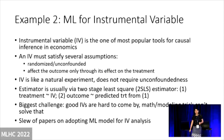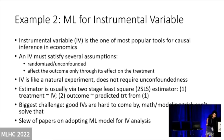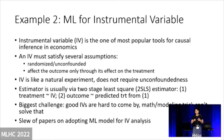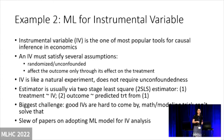The second example is machine learning for instrumental variables. Instrumental variable, or IV, is probably one of the most popular tools in economics and social science. IV is basically a natural experiment. An instrument needs to satisfy several assumptions: it needs to affect the outcome, but only through its effect on the treatment. The instrument variable itself should have no direct effect on the outcome, but will affect the treatment, and through that affect the outcome. It also needs to be randomized and unconfounded. Economists have a lot of clever ideas for finding natural experiments, like the year you were born — that kind of thing. And if you can find a good instrument, you don't need the unconfoundedness assumption.